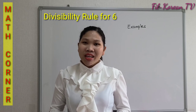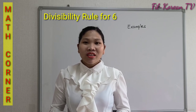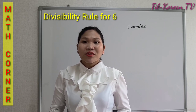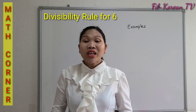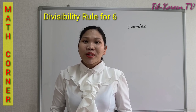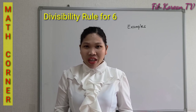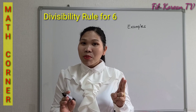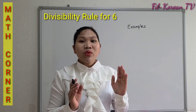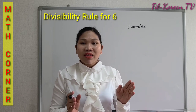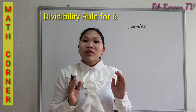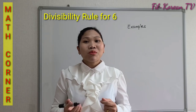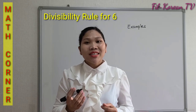And for 3, if the sum of the digits of a given number is a multiple of 3, that number is divisible by 3. We must remember that rule because we will apply it in determining whether a number is divisible by 6.